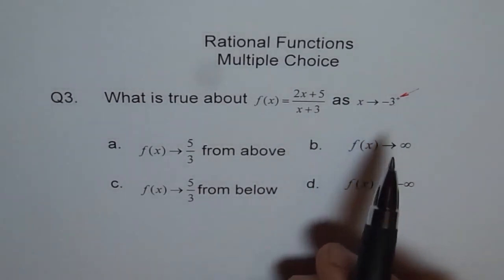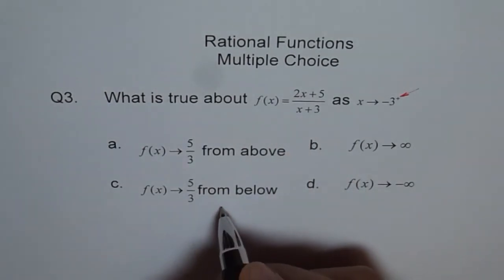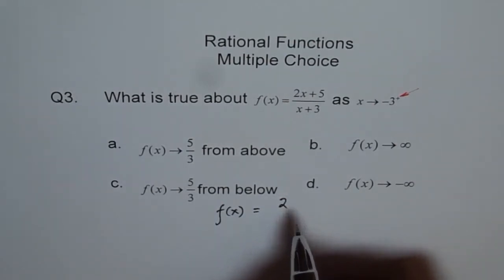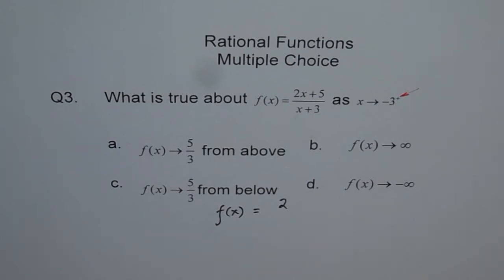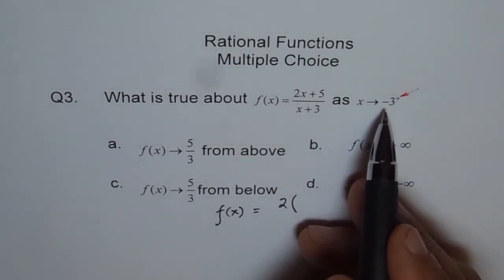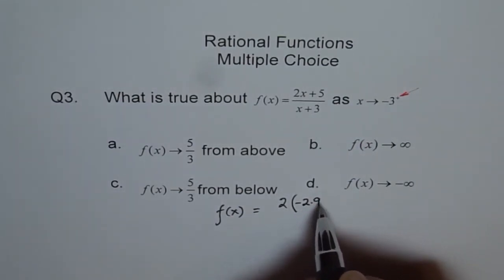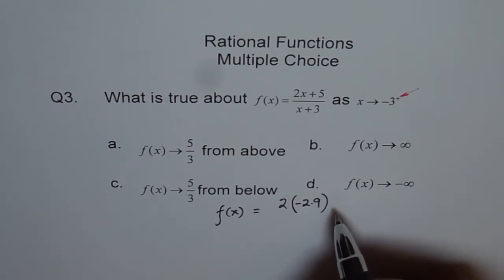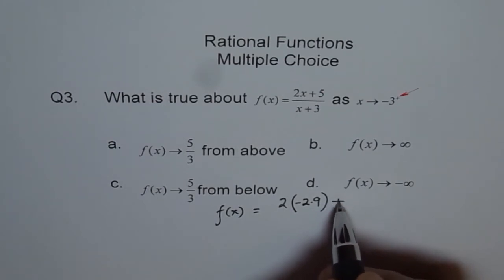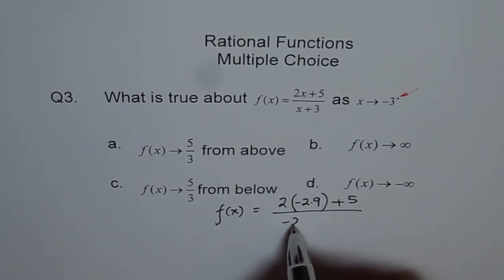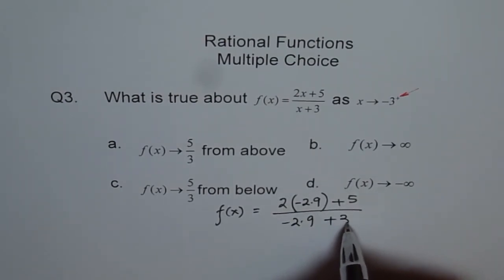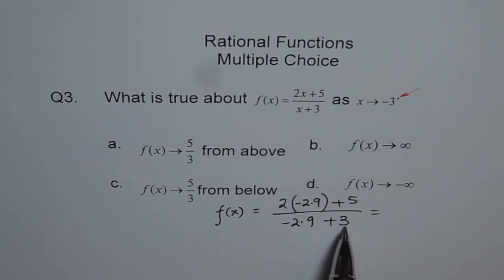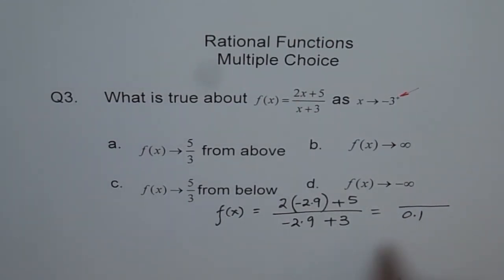Minus 3 from the positive side — let us plug in a value. f of x equals 2 times minus 2.9, because approaching from the positive side means we are to the right of minus 3. So we use minus 2.9 for x, plus 5, over minus 2.9 plus 3. The denominator is going to be positive — 3 is bigger than minus 2.9 — so the denominator is positive, maybe very small, like 0.1, but positive.